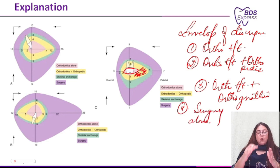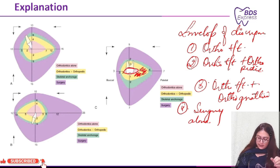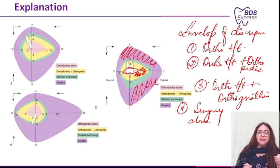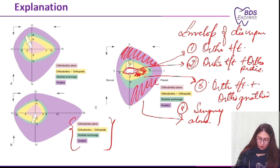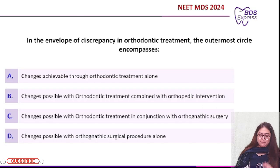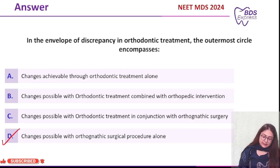So the purple is the outermost circle — changes achievable only through surgery alone. Green is the third circle, yellow is the second, and the innermost is pink — orthodontics alone, then orthodontics plus orthopedics, then skeletal anchorage, then surgery. Coming back to our question, the correct answer is: changes possible with orthosurgical procedure alone is the outermost part.